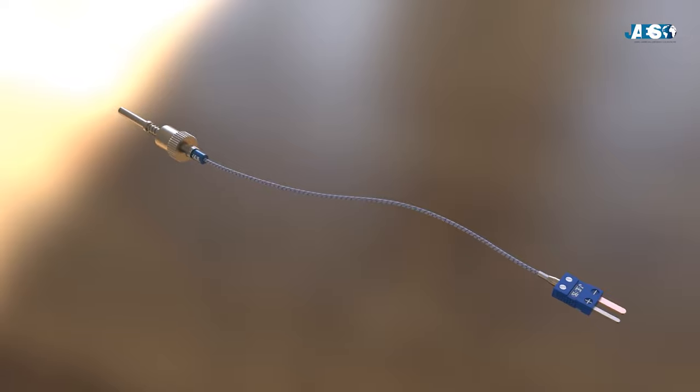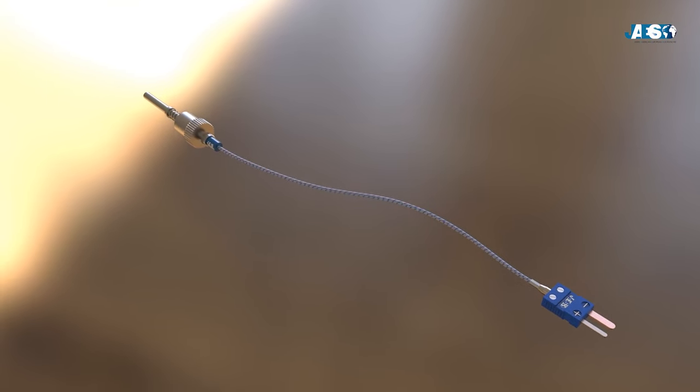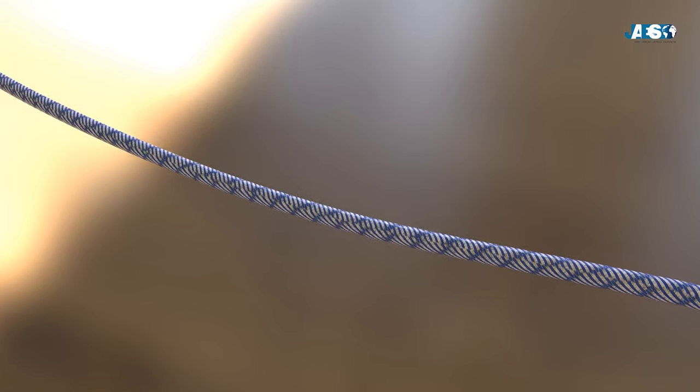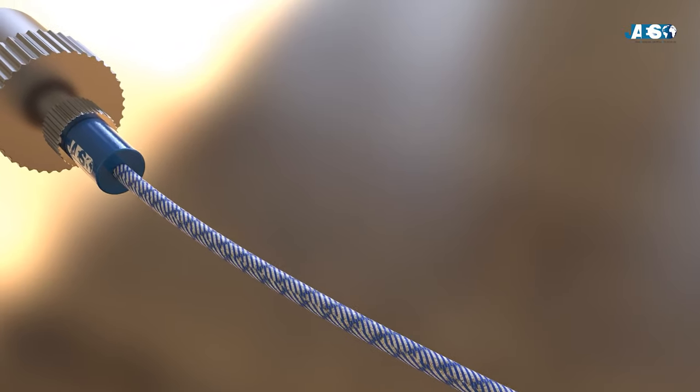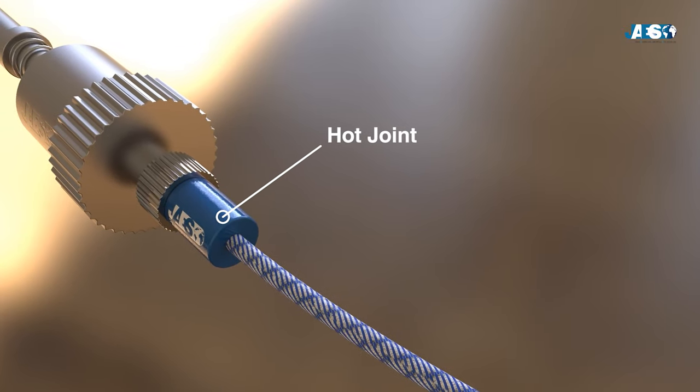This is a thermocouple. It is a probe made up of two different metal wires welded at one end. This part, called the hot joint, will be positioned in the space to be measured.